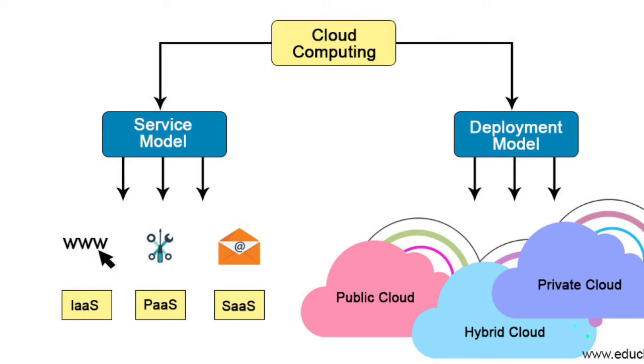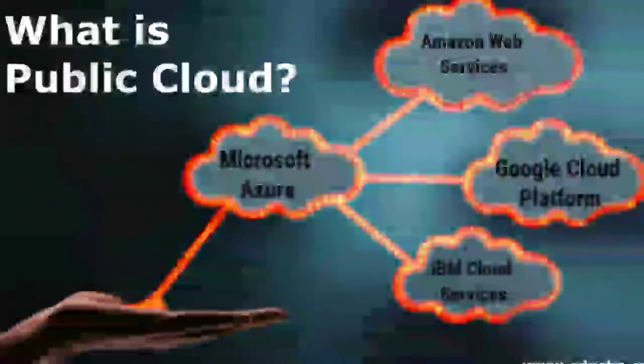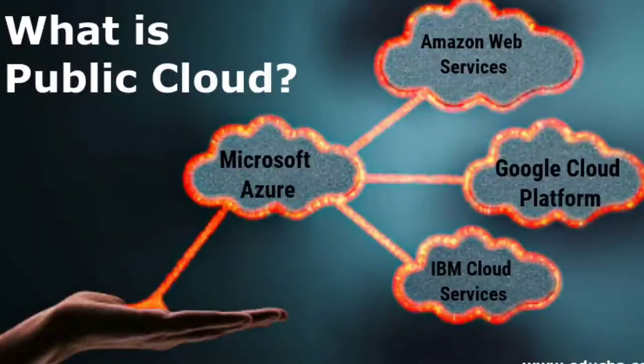The deployment models are public, private, and hybrid. Now we have to talk about public cloud. Examples of public cloud are Microsoft Azure, AWS, or Google Cloud. In the public cloud, infrastructure and software resources are available and accessible for everyone.